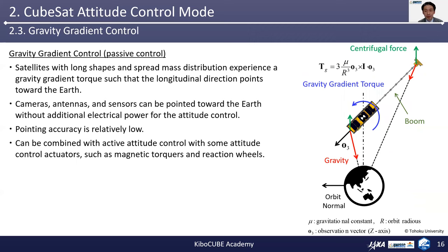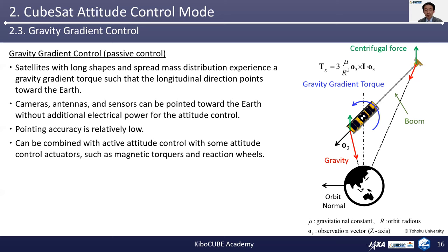Another interesting attitude control method is the gravity gradient control, which belongs to the passive control category. Satellites with long shapes and spread mass distribution experience a gravity gradient torque such that the longitudinal direction points towards the Earth. The cameras, antennas, and sensors can be pointed towards the Earth without additional electrical power or attitude control. But the pointing accuracy is relatively low. This can also be combined with active attitude control using actuators such as magnetic torquers and reaction wheels.